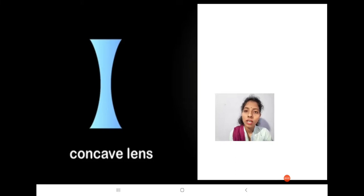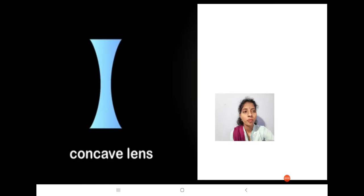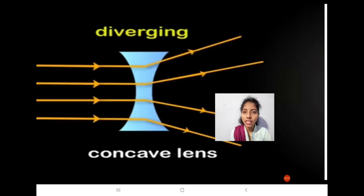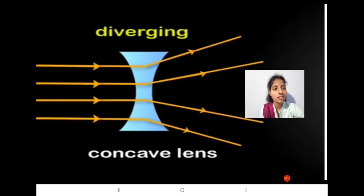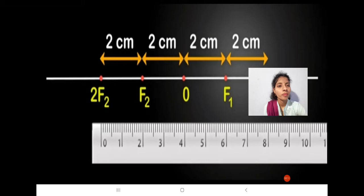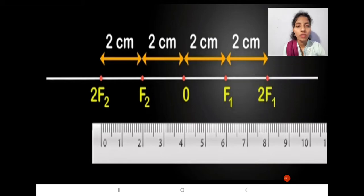Now we are going to learn how to draw the ray diagrams for concave lenses. Concave lenses are diverging type of lenses. Here also we have three rules to draw the ray diagrams for the concave lenses.